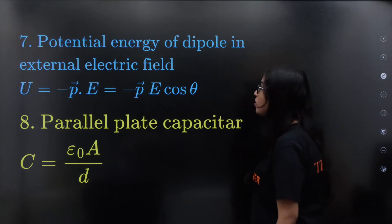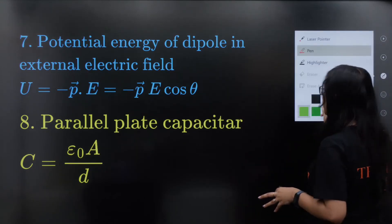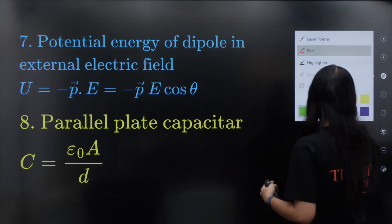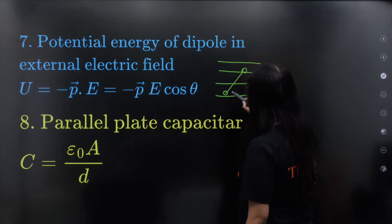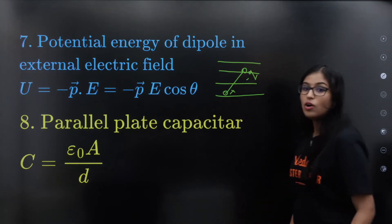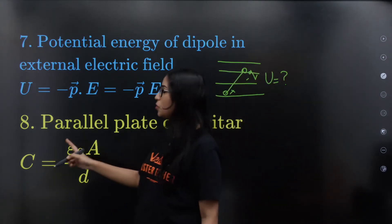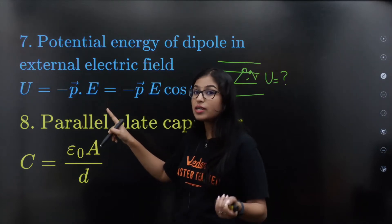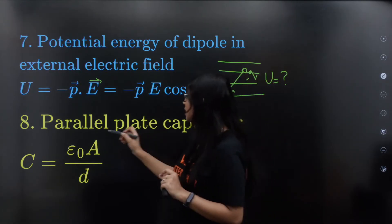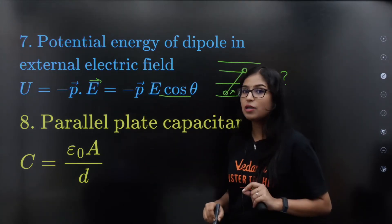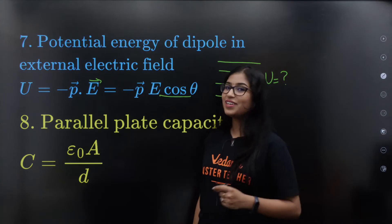Potential energy of a dipole in an external electric field. If we place a dipole in an external electric field, the potential energy U is equal to −PE cos θ. The torque is PE sin θ.